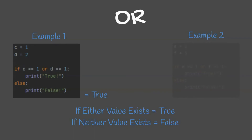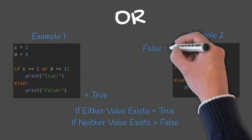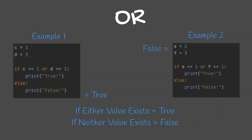In our next example, E equals 2 and F equals 3. So if E equals 1 OR F equals 1, this would print true, otherwise it would print false. In this example, false would be printed, as E equals 2 and F equals 3.